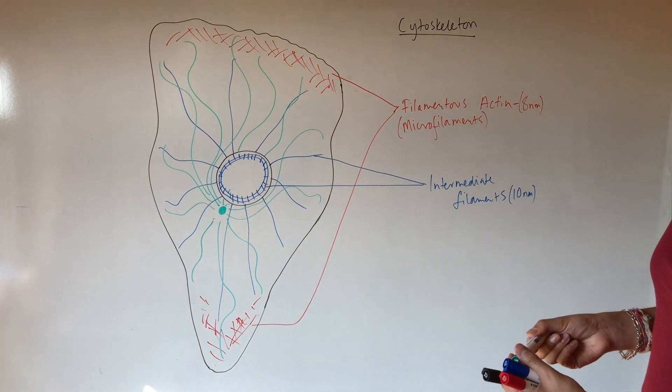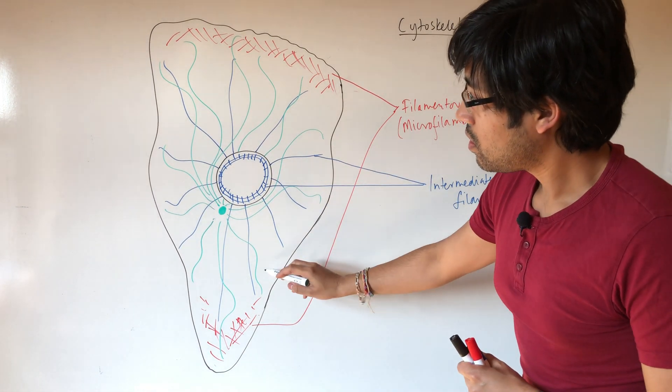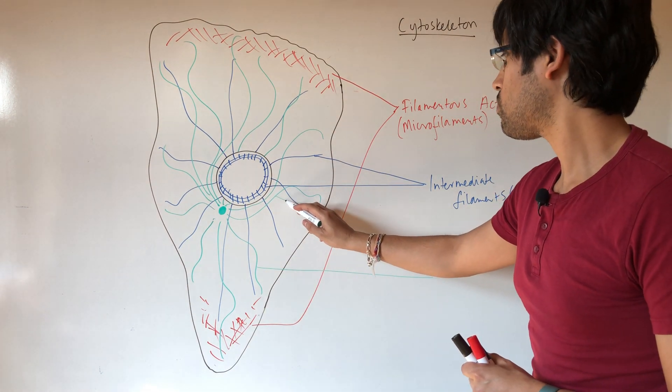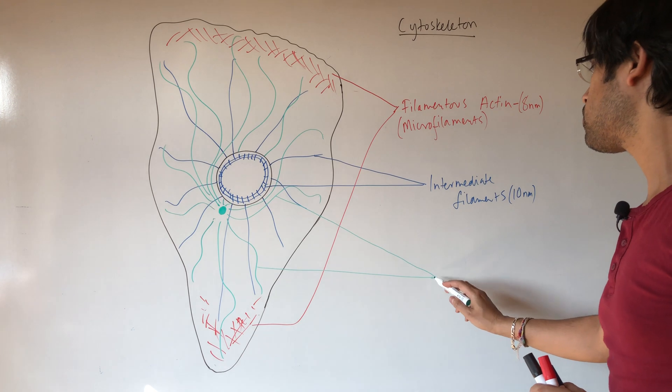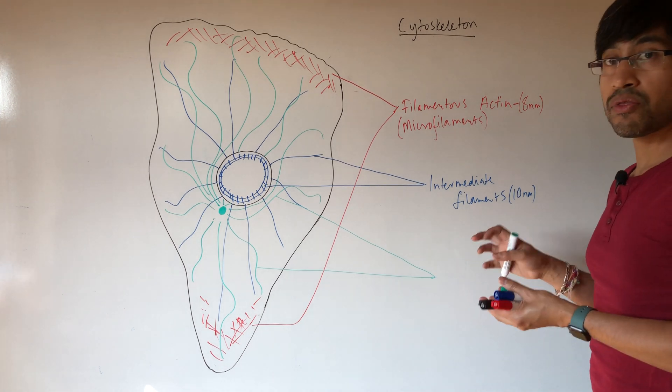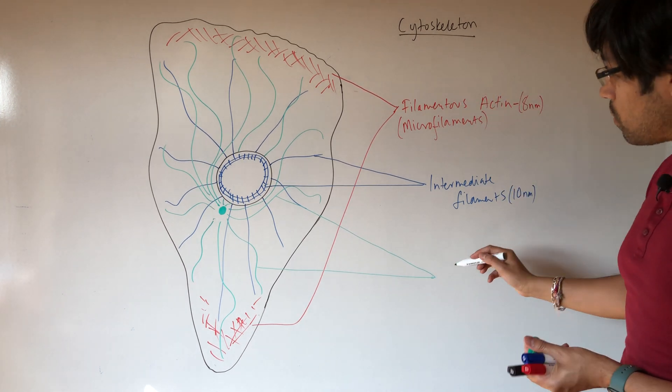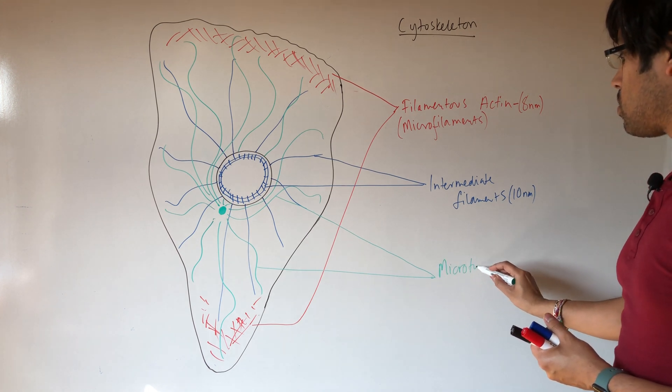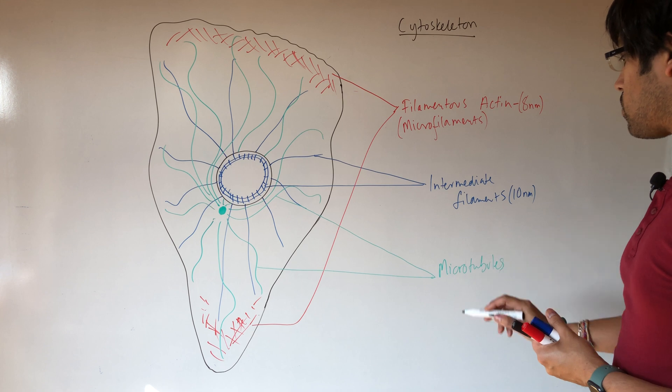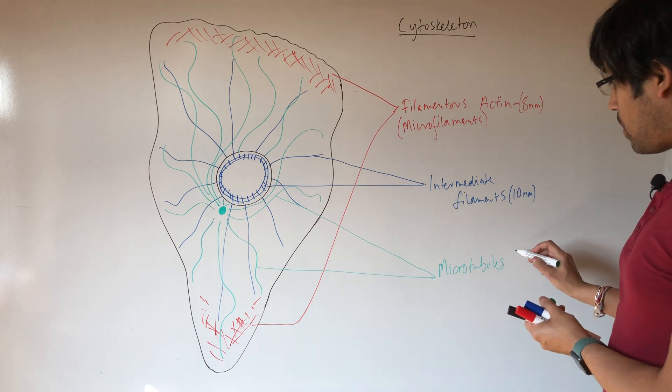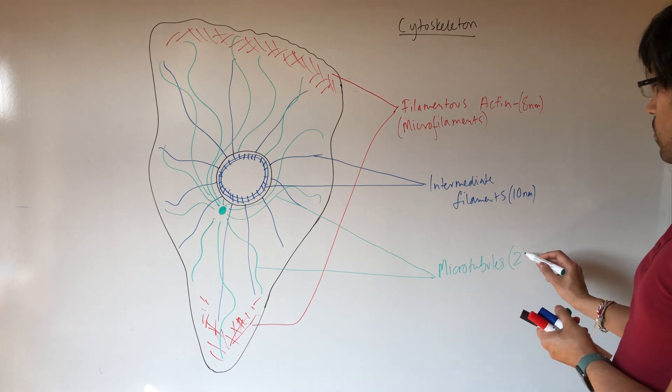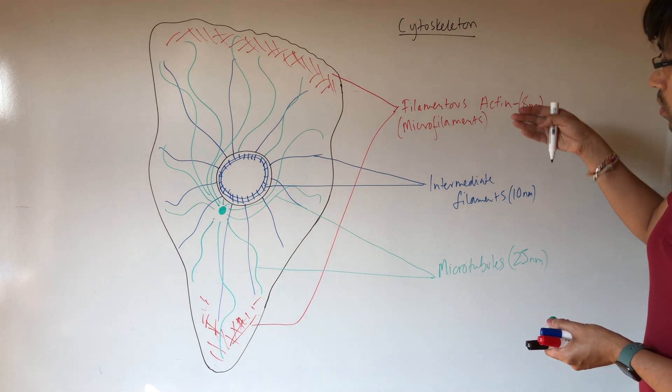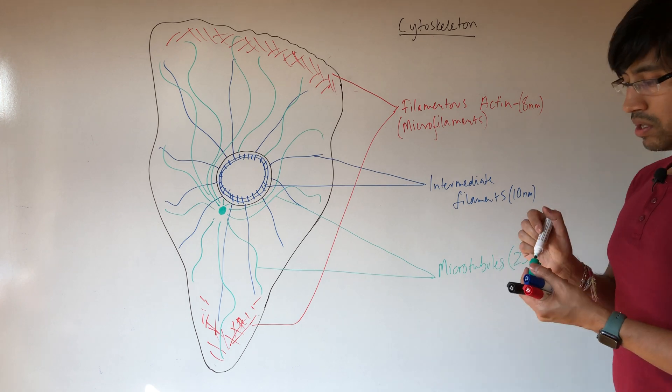And finally, we also have in green, the microtubules. Not super helpful in terms of the name because they are the thickest of the cytoskeletal elements that we'll be looking at. So there they are, the microtubule network. And the microtubule network, so these filaments are about 25 nanometers in width. So you have small, bigger, biggest.